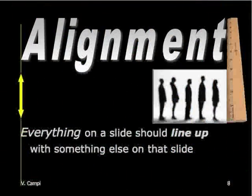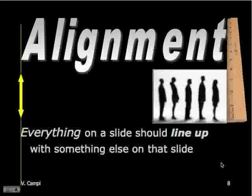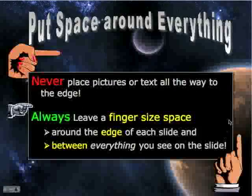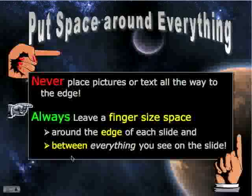Alignment — everything on a slide should line up with something else on that slide. Everything doesn't have to line up with everything, but as illustrated here, these elements line up with one another. Put space around everything. Never place pictures or text all the way to the edge — it just seems very cramped and constricted. Always leave a finger-sized space around the edge of each slide and between everything you see on the slide. Just allow space.